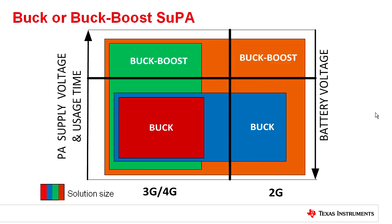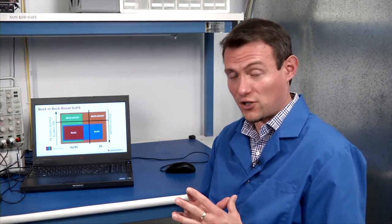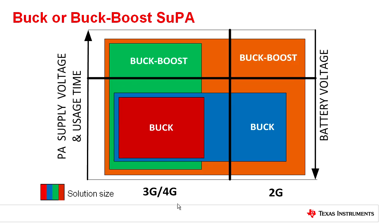On the X axis, we have 2G or 3G/4G mode support. What is the main difference between those two is really current handling. 2G, you need very high currents like 2.5 or even 3 amps. As a result, you need larger devices on your die, so your die is bigger and total solution size is bigger because your inductor also needs to handle larger current. This is presented by rectangles with different colors, so different colors are presenting different solution sizes.